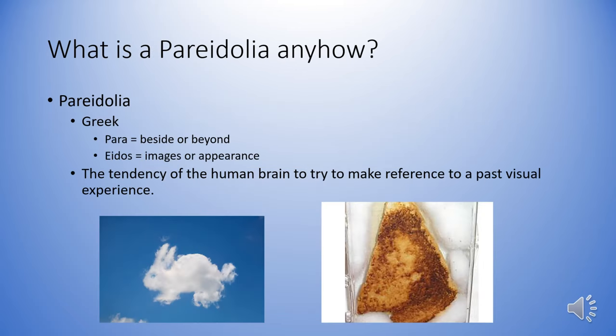You may have heard the term pareidolia, which may be new to you. Pareidolia is a derivative of two Greek terms: para meaning beside or beyond, and eidolos meaning image or appearance. It's the tendency of the human brain to make a reference to a past visual experience when we see something we don't quite understand. As a consequence, a certain cloud formation may look like a rabbit, or a piece of burned toast may look like it has a picture of the Mother Mary inside it. That's what pareidolia is.